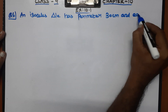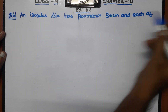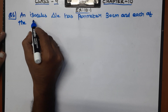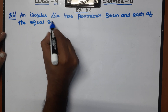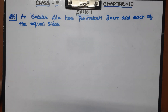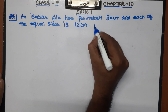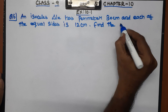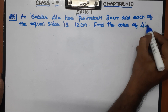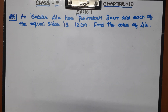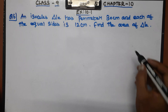An isosceles triangle has a perimeter of 30 cm and each of its equal sides is 12 cm. We need to find the area of the triangle. This is an isosceles triangle, where any two sides are equal.